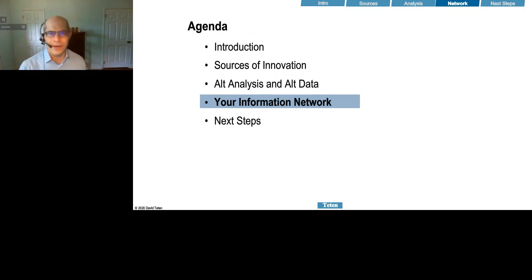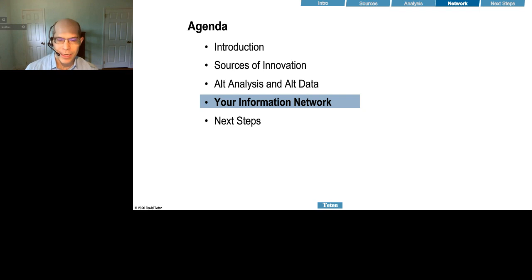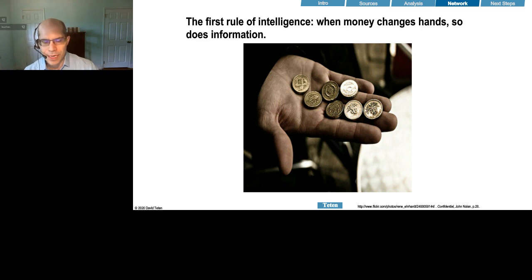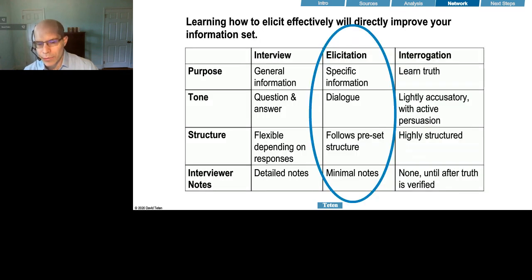The next source of information is your information network. In both public and private markets, there's a disproportionate value attached to verbal information — information you're not getting in print — because anything in print is relatively easy to commoditize and your competitors likely have it. That's one of the reasons for the expert network industry. I'm going to talk about some ways to identify experts and use them more effectively. I used to be CEO of an expert network, and one of my learnings was there was a wide range of skill in elicitation — the process of gathering information from sources.